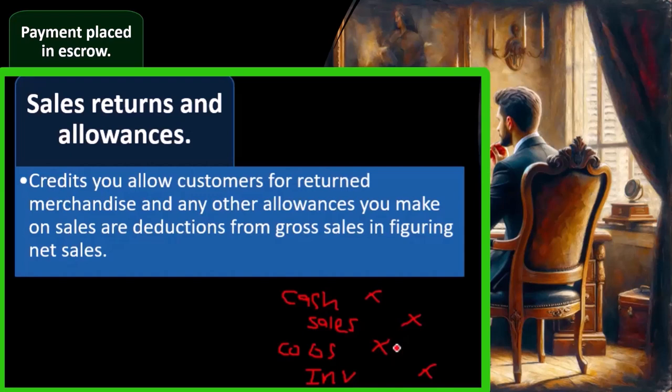If they return the merchandise, you'd think you'd reverse the entry and bring sales back down. But normally we don't reduce sales directly. Instead, we use a contra sales account called sales returns and allowances — it acts like an expense, making net income go down.